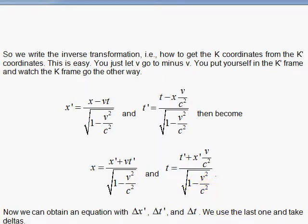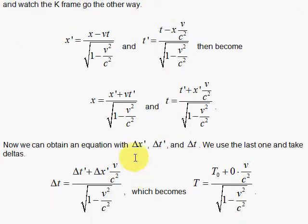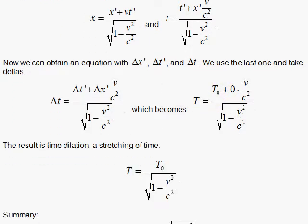So now we have what we're looking for. We're looking for an equation that has a delta X prime, a delta T prime, and a delta T. Here it is. Then we set delta X prime to be zero, since the clock is not going to move with respect to itself in the prime frame. And this is delta T prime is the proper time of the clock, since that's the frame it's in. And what we measure in the laboratory frame is a time stretch, a time dilation.